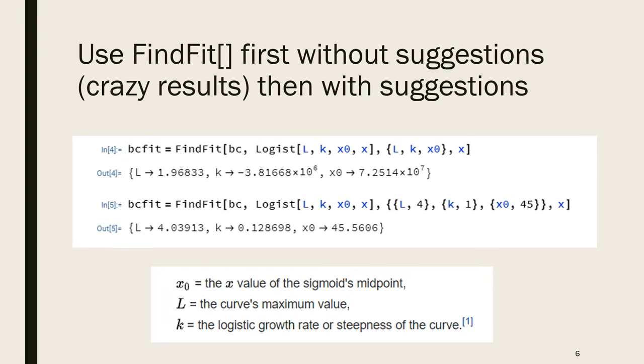I decided I would restart and this time give some starting points. What do the parameters represent? L was where we're heading - around 4 percent, so we'll put in a guess of 4 for L. K was how fast it went up - I don't have a good guess for that so I just said 1. x₀ is the midpoint of the S - I had already plotted just the data and saw it was around 45, so I put that in.